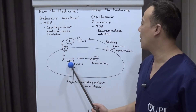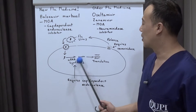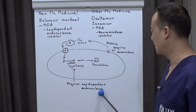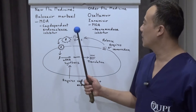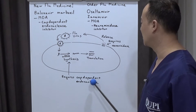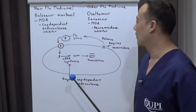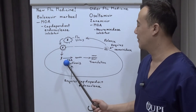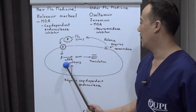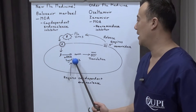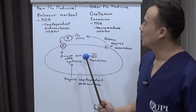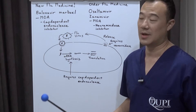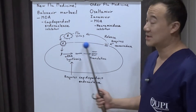This mRNA synthesis requires a cap-dependent endonuclease. If you block or inhibit the cap-dependent endonuclease, you prevent the flu virus from replicating itself through mRNA synthesis — basically preventing the flu virus from multiplying and spreading at the cellular level.